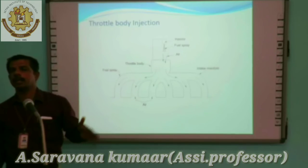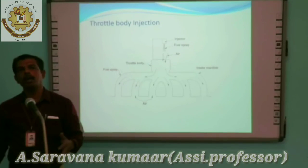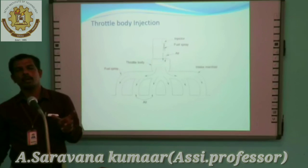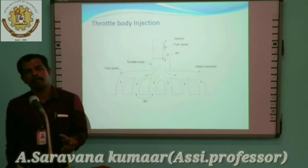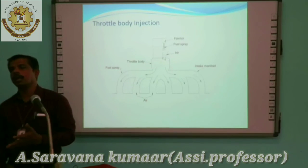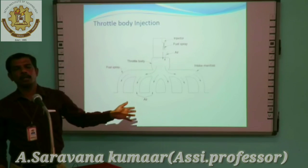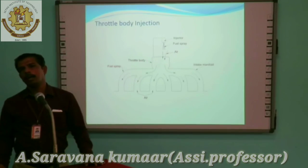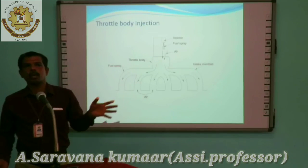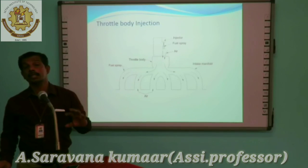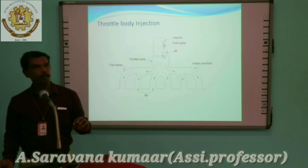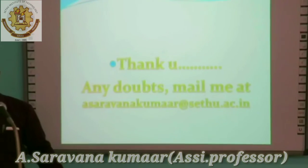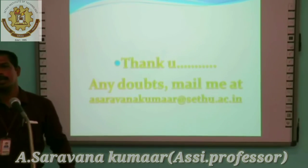These are all the latest technologies available, other than the already-seen carburetor and fuel injection from a nozzle. Other than that, the latest fuel supply system is now implemented. This is the total structure of a fuel supply system of a latest automobile. Thank you. Any comments, please mail to a.saramanakumar at saidhu.ac.im. Thank you.